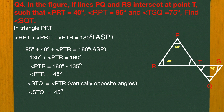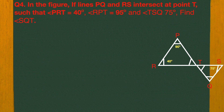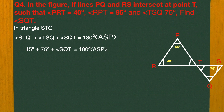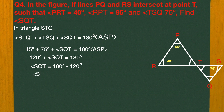Now we look at the small triangle STQ and apply the angle sum property. In triangle STQ: angle STQ plus angle TSQ plus angle SQT equals 180 degrees. We have STQ as 45 degrees plus TSQ as 75 degrees, giving 120 degrees plus SQT equals 180 degrees. Therefore SQT equals 60 degrees.